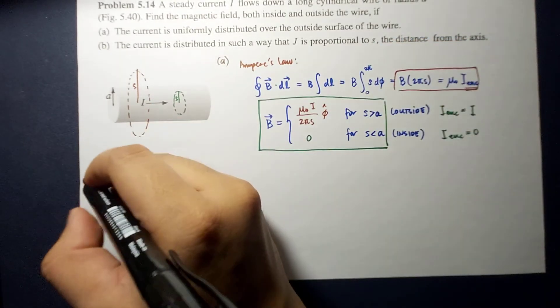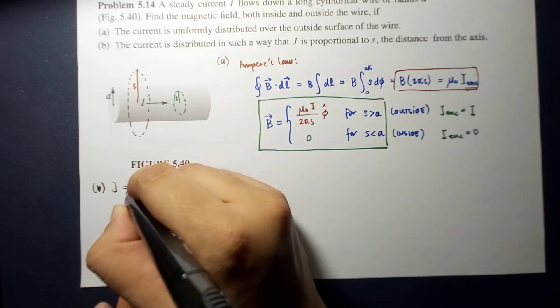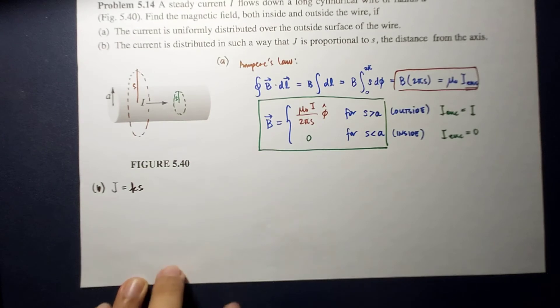so it's proportional to K, so the distribution J, or the density J, is, let's say, K times S.